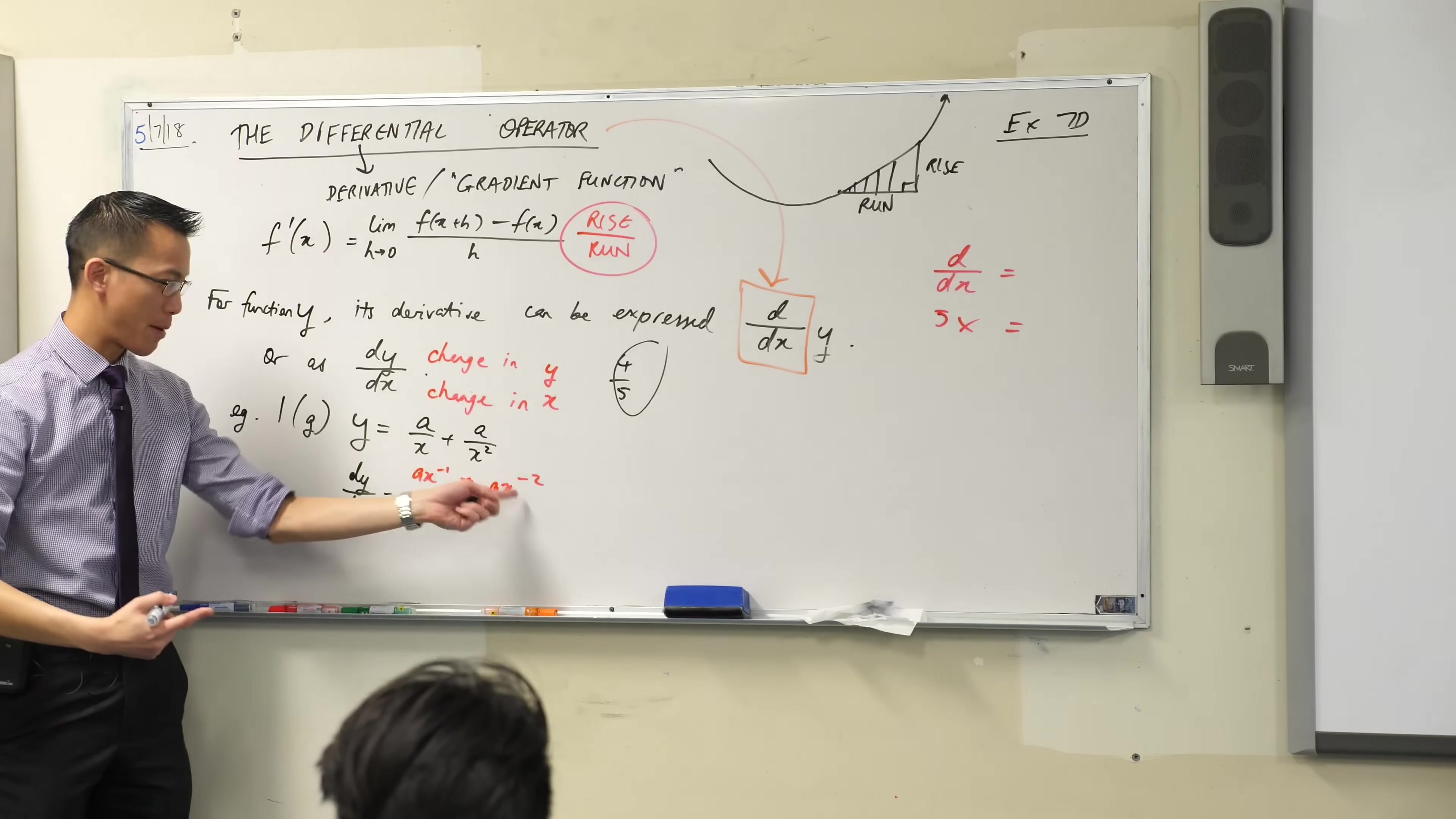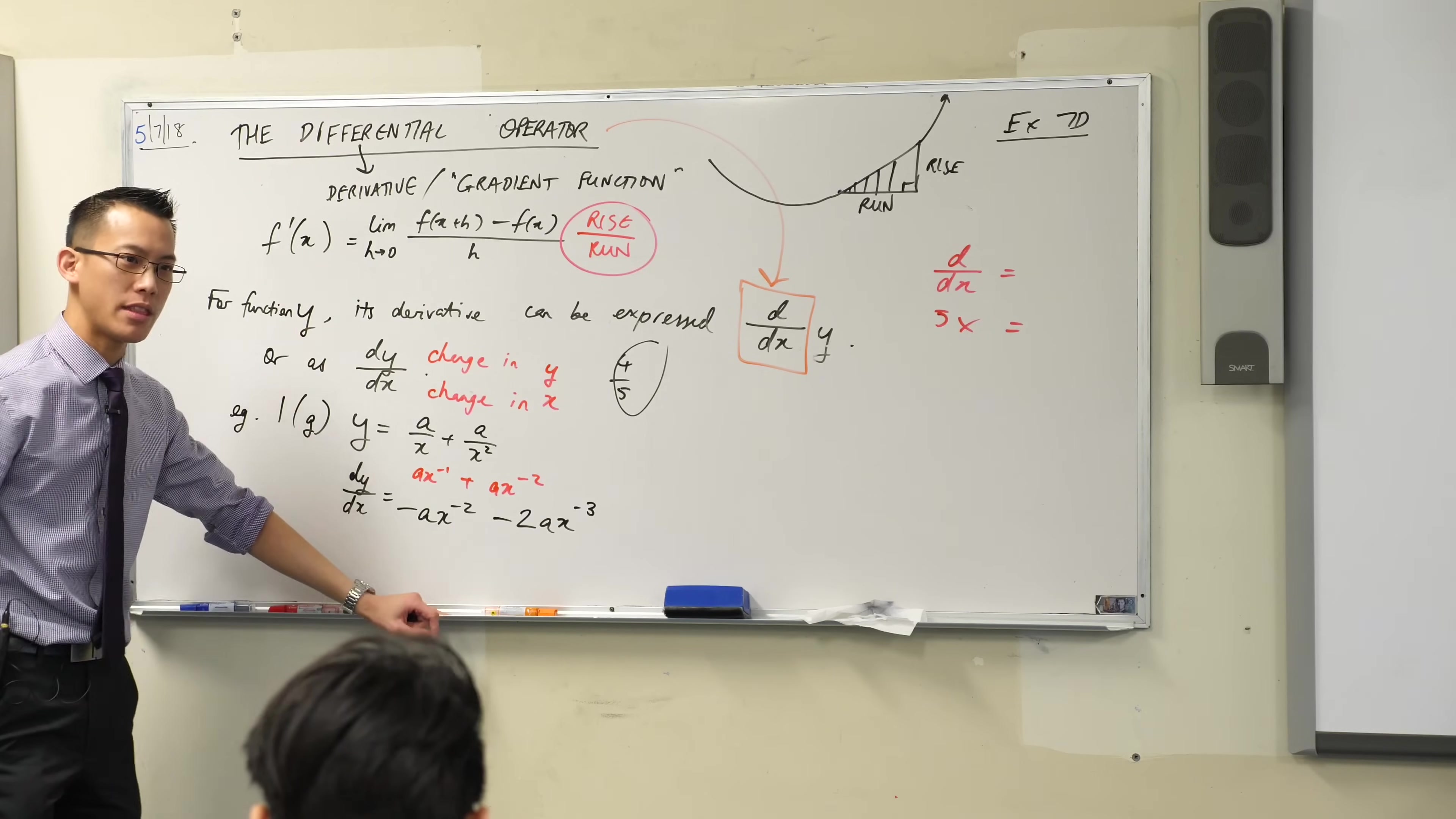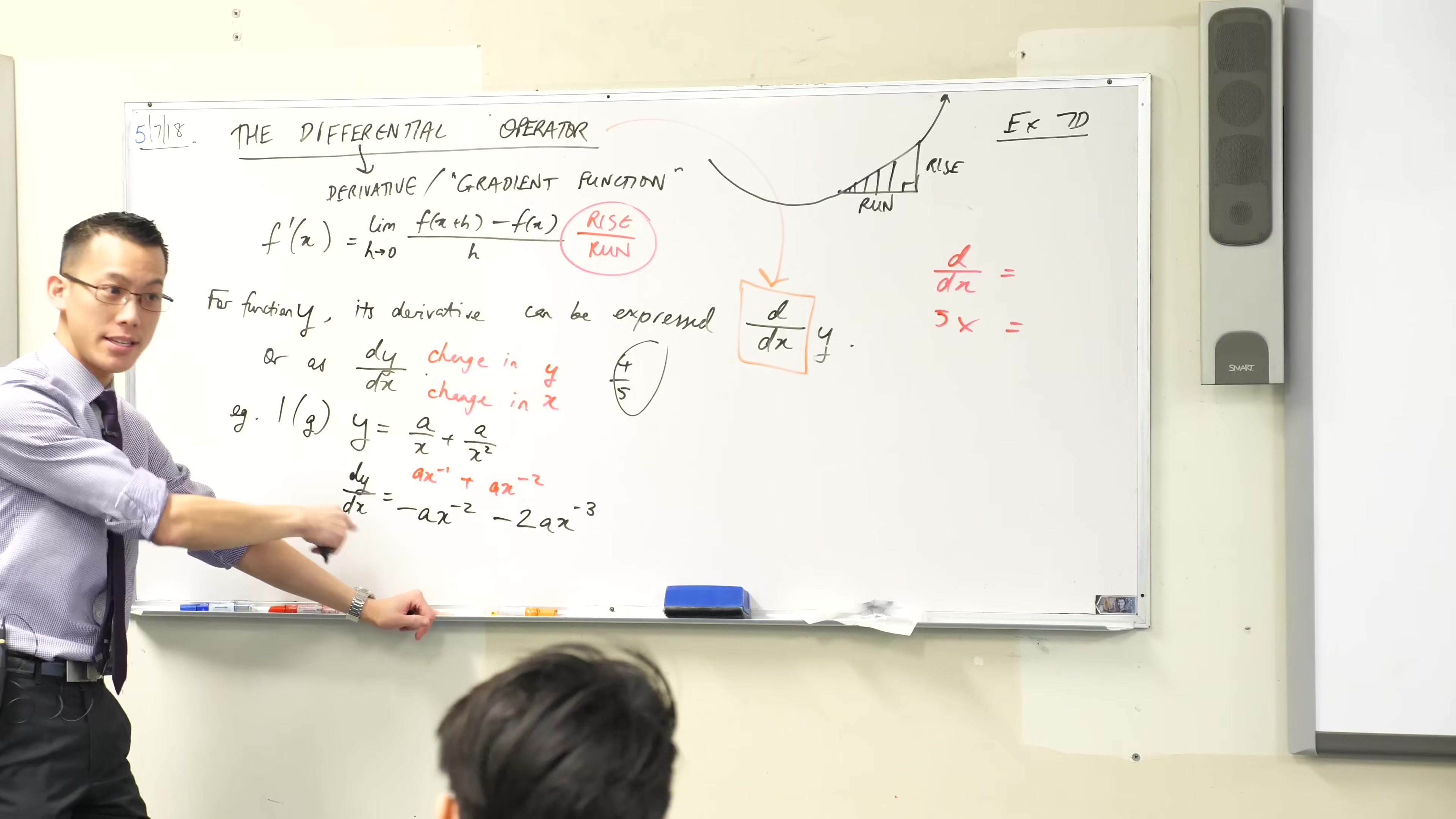I'm going to rinse and repeat over here, but my power is slightly different. So I'll multiply by negative 2. The a is still there. And then the power reduces by 1, which gives me this. Are you happy with that answer? You have differentiated. If all you asked to do was find the derivative, this is the derivative.